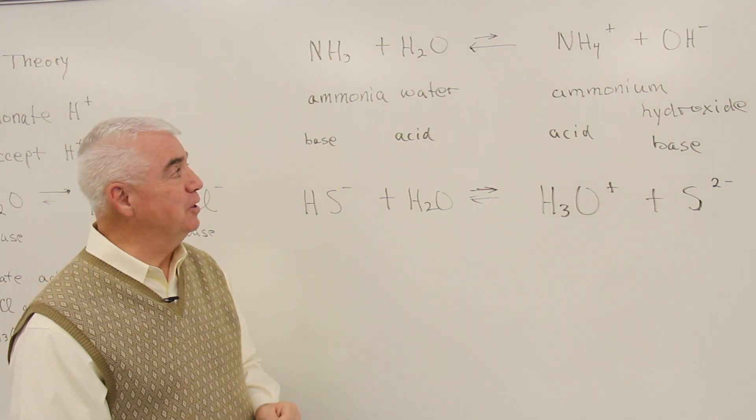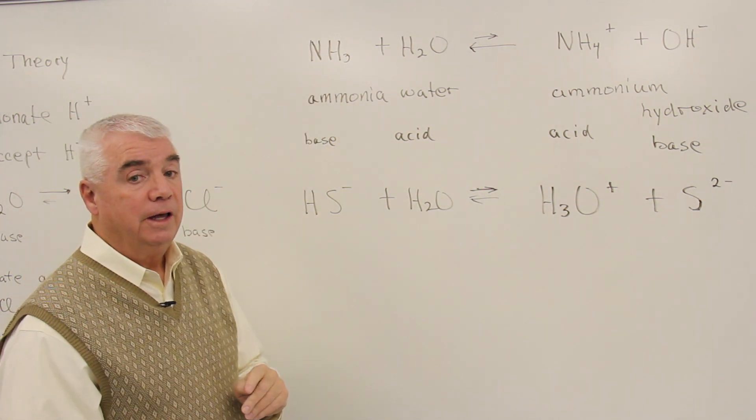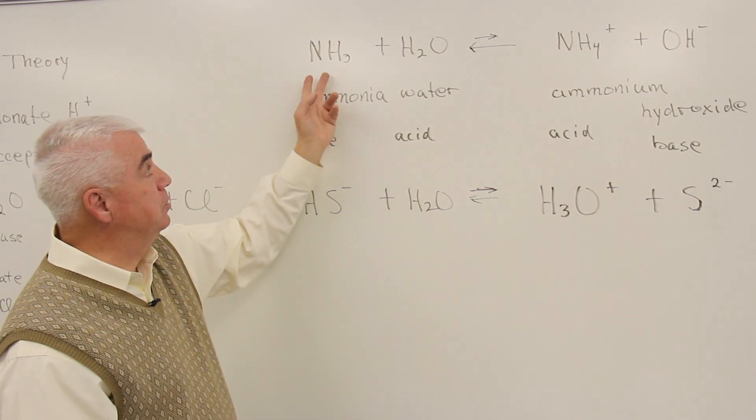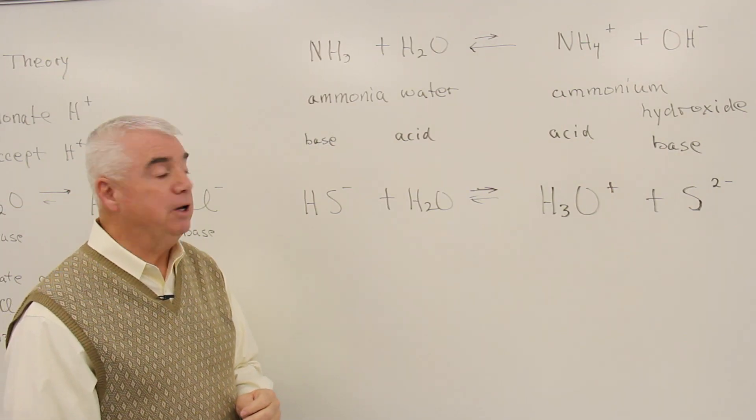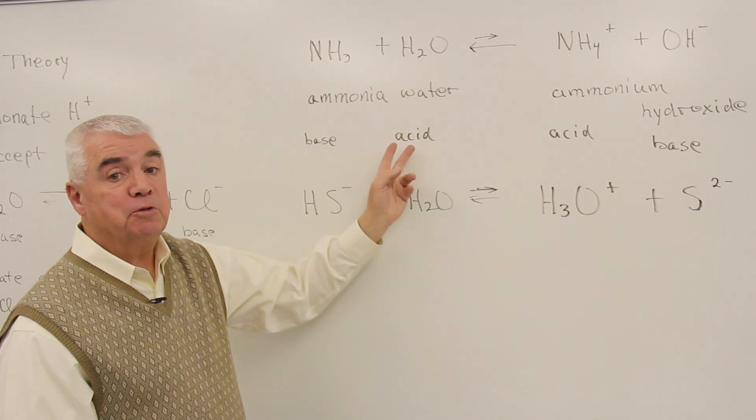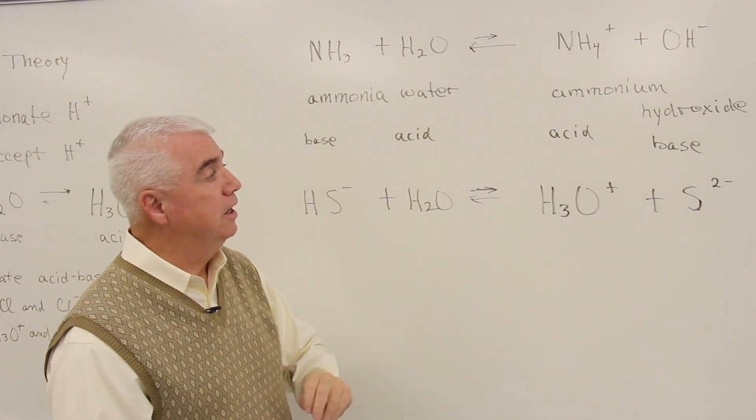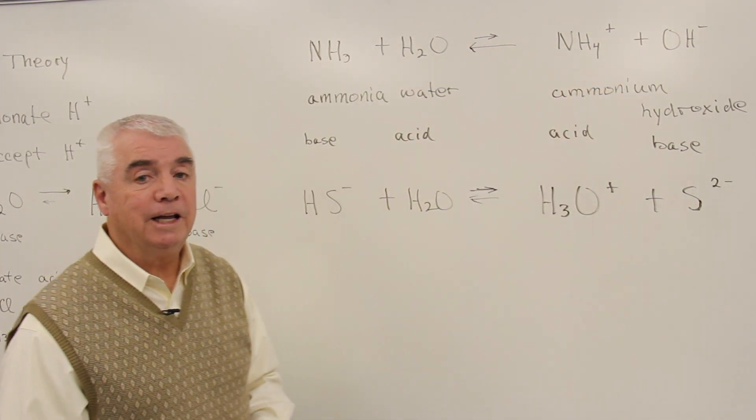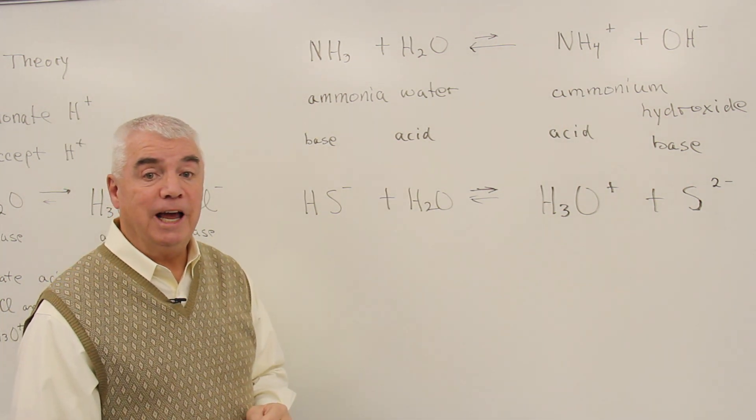Let's identify the Bronsted acids and bases. Let's use nitrogen as sort of a label to help us track what happens. Here there are three hydrogens associated with the nitrogen. Over here, there are four. That means that NH3 has accepted a proton. It must be the base. Water must be the acid, then. And let's see, here there are two hydrogens associated with the oxygen. Over on the right-hand side, only one. So indeed, water is an acid this time.